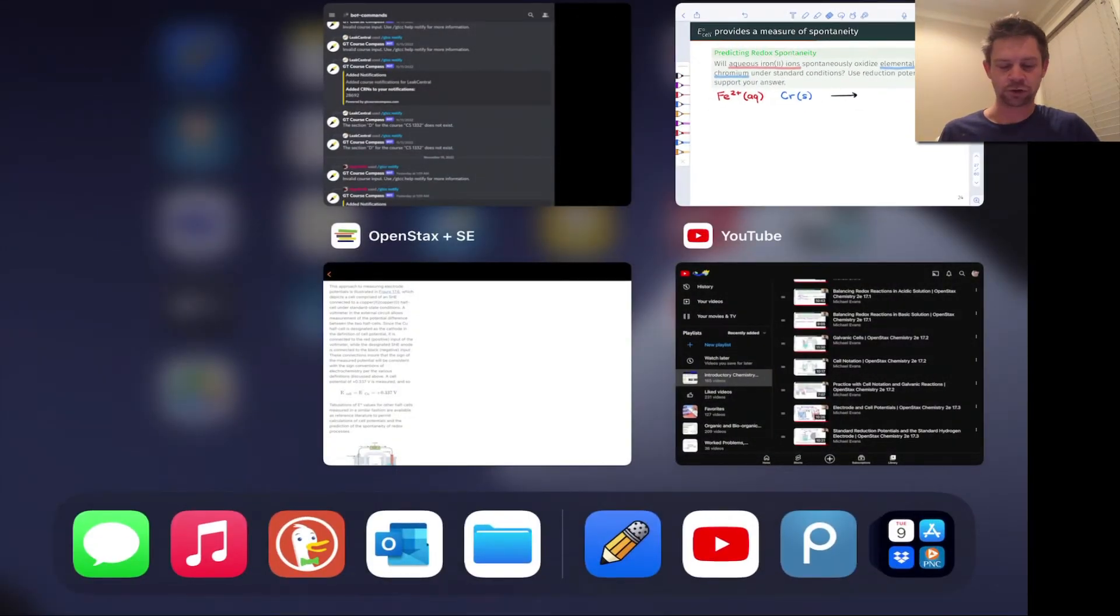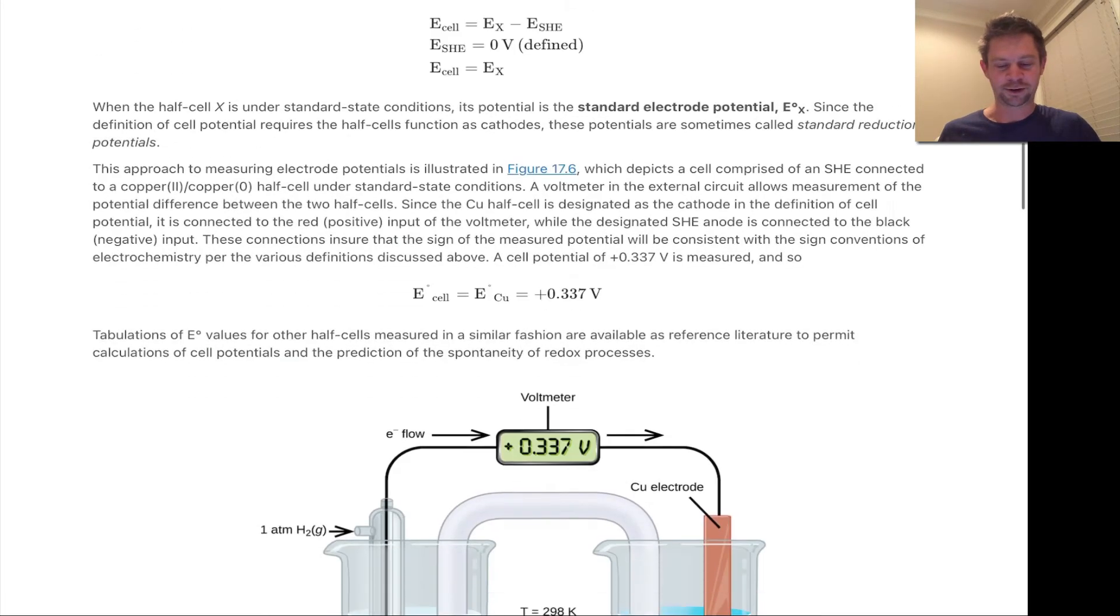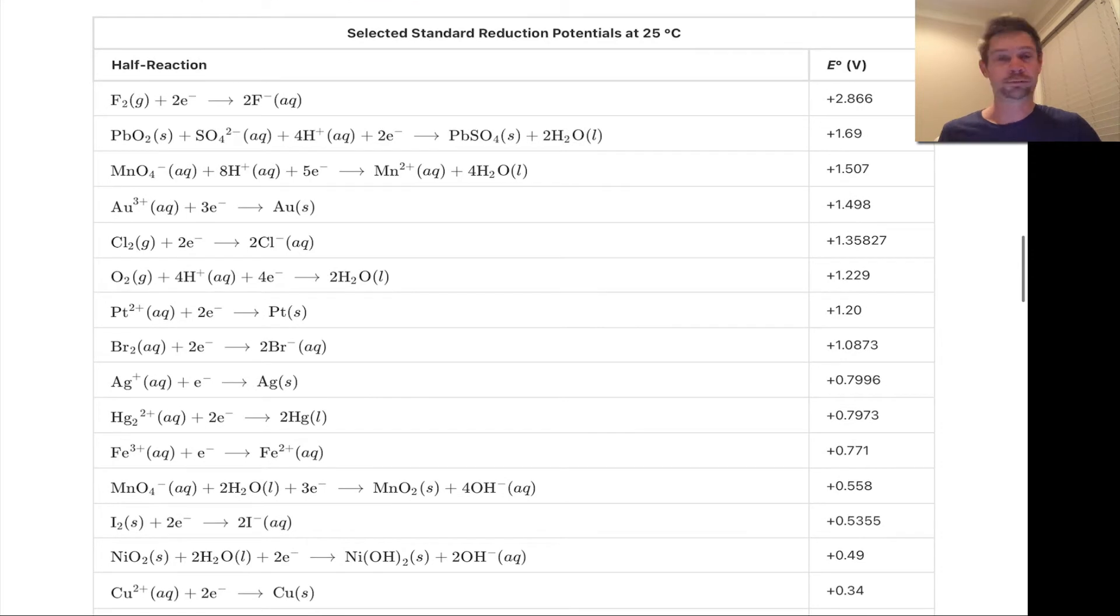And I actually encourage you to pause the video and work through this on your own in a table of reduction potentials. There's one on Wikipedia, there's one in the OpenStax text. You can find them all over the place. But I've pulled up the one here from the OpenStax Chemistry second edition text.